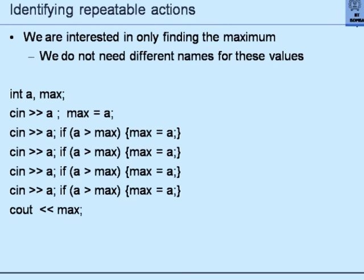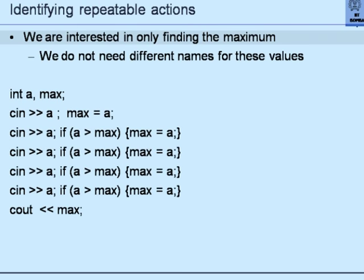We observe something very important: while each instruction is actually different, each one is doing the same job — getting a number from outside, comparing with max, and reassigning max if required. If we are only interested in finding the maximum and not the individual identity of numbers, why use different names B, C, D for each? We can use the same name for all of them.